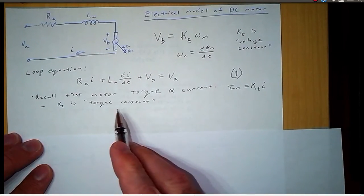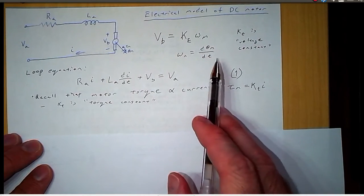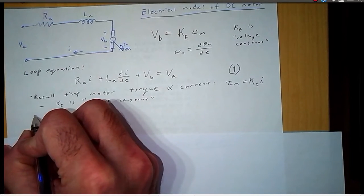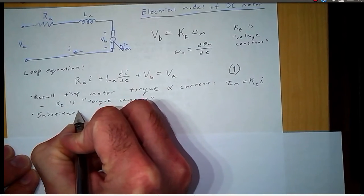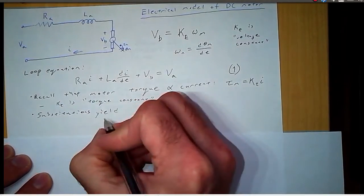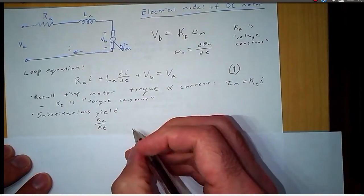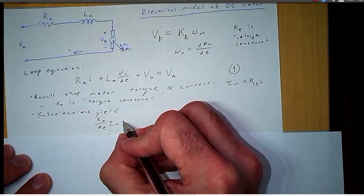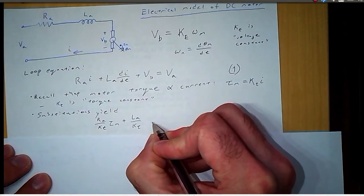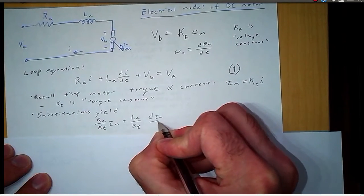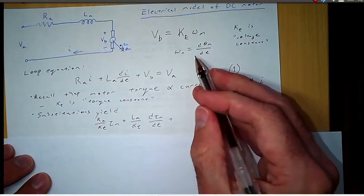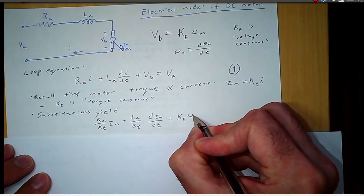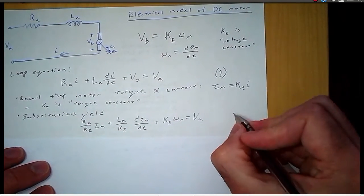We're going to substitute these into Equation 1 — substituting for the current and for VB. So we have RA over KT times the motor torque, plus LA over KT times the derivative of the torque, plus KE times the angular velocity, all equal to the applied voltage. We'll call that Equation 2.